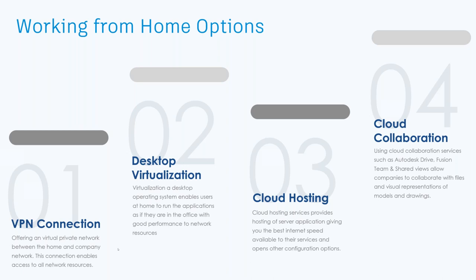The third option is cloud hosting — also very popular. Cloud hosting means rather than buying a physical blade server, can you just have it hosted on Amazon or Azure? We've been there, done that. You can look at an AKN article on sizing, optimization, speeds, operating systems, and platforms. That absolutely works and it's a great way to work with Vault, even going forward. The fourth option — which we'll deep dive on today — is cloud collaboration using shared views, Fusion Team, and Desktop Connector.